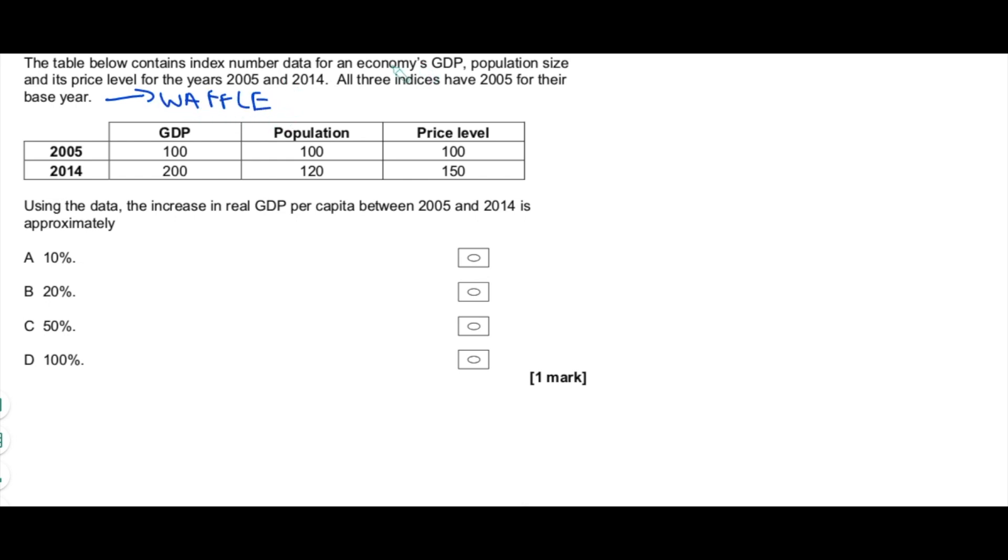All those three lines are saying is exactly what we can see in the table and we have eyes. We don't need to worry about stuff like that. So we can ignore all that and go straight to the question which is down here. The question says using the data, what's the increase in real GDP per capita between 05 and 2014? We know that 2005 is the base year and as an index value, everything in 05 has a value of 100.